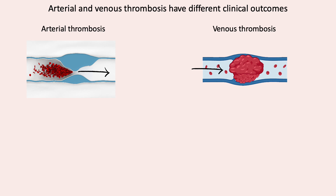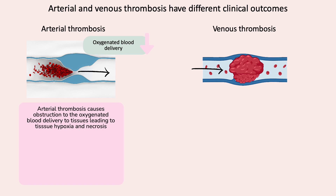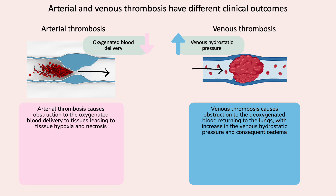The clinical consequences of arterial and venous thrombosis are vastly different. Arteries carry oxygenated blood to tissues. Arterial thrombosis obstructs arterial blood flow, causing reduced or absent oxygenated blood delivery to the tissue, leading to tissue hypoxia and necrosis. Veins, on the other hand, transport deoxygenated blood back to the lungs. Venous thrombosis causes obstruction to deoxygenated blood returning to the lungs and increases venous hydrostatic pressure.